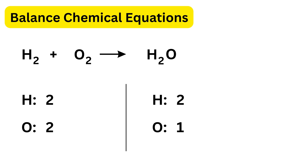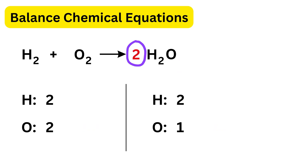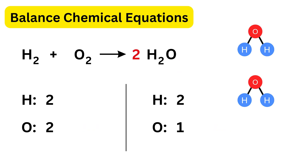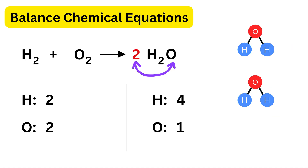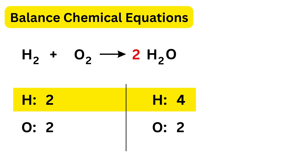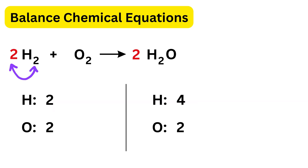Oxygen is unbalanced: two oxygens on the left but only one on the right inside H₂O. To fix it, we put 2 in front of H₂O, giving two H₂O molecules — that's 4 hydrogen atoms and 2 oxygen atoms on the right. To balance hydrogen, we put 2 in front of H₂ on the left: 2 × 2 = 4 hydrogens. Both sides now match. This is the balanced equation.